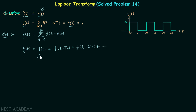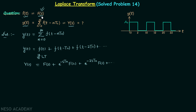Now we will take the Laplace transform. The Laplace transform of y(t) is Y(s), so on the left hand side we have Y(s), and on the right hand side we have F(s) plus e^(−st₀)·F(s) plus e^(−2st₀)·F(s) and so on. We get F(s) because the Laplace transform of f(t) is F(s), and we get e^(−st₀)·F(s) by applying the time shifting property to f(t minus t₀), and similarly for the remaining terms.